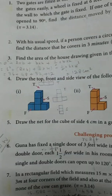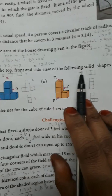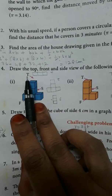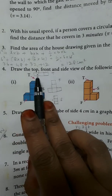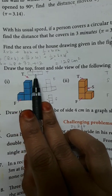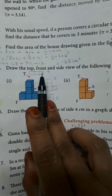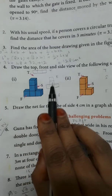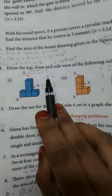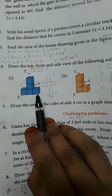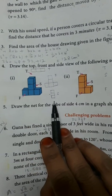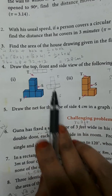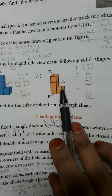Next question 4: Draw the top, front, and side view of the following solid shapes. For the first shape, you can see 3 square boxes. The top view, front view (3 boxes in a row), and side view (3 boxes vertical) are identified.